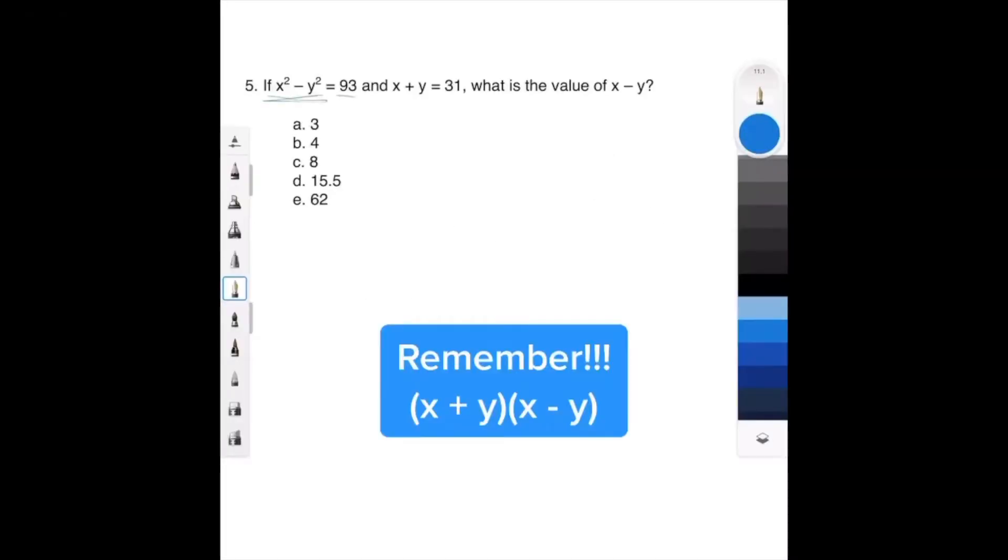So x squared minus y squared is 93, x plus y is 31, and it's asking for x minus y. People are like, let me solve for x, let me solve for y. Nah, you're not going to do that. We're going to make it a lot easier. Here's the deal.